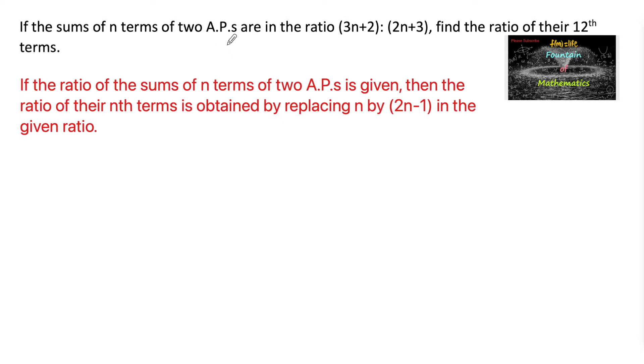Two arithmetic progressions are given whose sums of n terms are in the ratio (3n+2) to (2n+3). Let us consider Sn upon Sn' is equal to (3n+2) upon (2n+3).